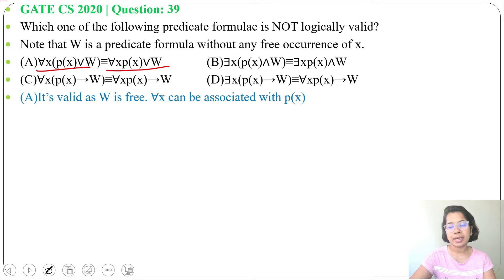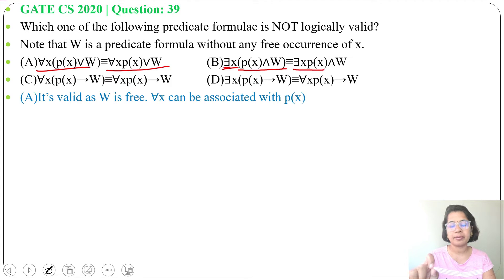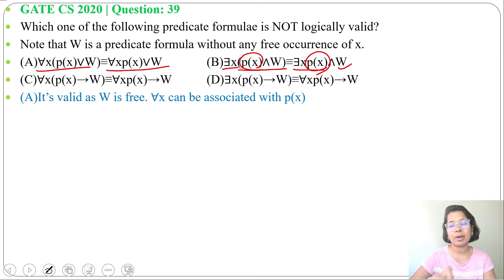Option B: there exists X (P(X) and W) is logically equivalent to (there exists X P(X)) and W. Here 'there exists X' is for both P(X) and W on the left side, but on the right it's only for P(X). W is not bounded — W is free. P(X) is bounded by the existential quantifier, so it is only applied for P(X), not for W.